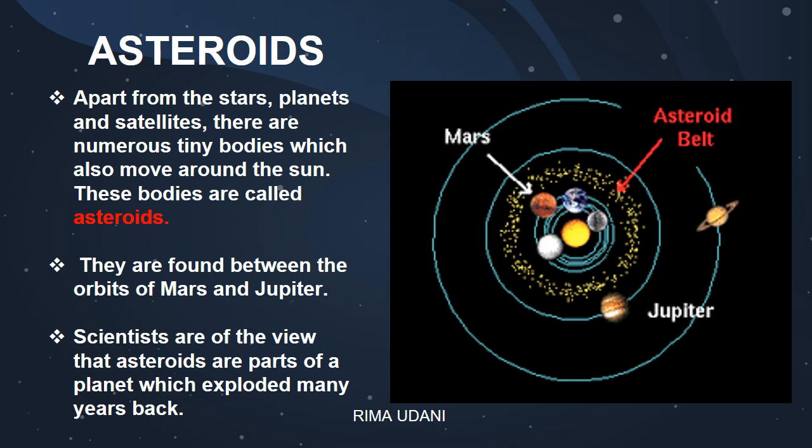Now let's learn about asteroids. Apart from the stars, planets, and satellites, there are numerous tiny bodies which also move around the Sun — these bodies are called asteroids. There is an asteroid belt between the orbits of Mars and Jupiter. Scientists are of the view that asteroids are parts of a planet which exploded many years back.